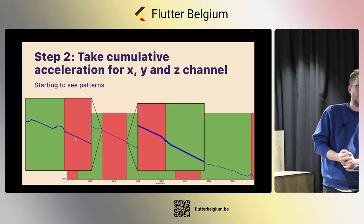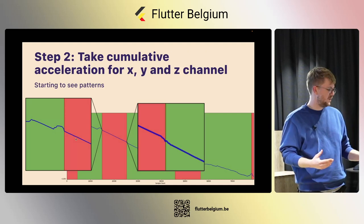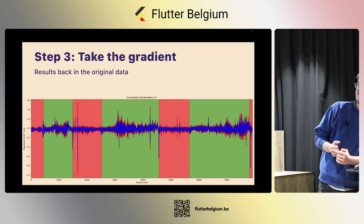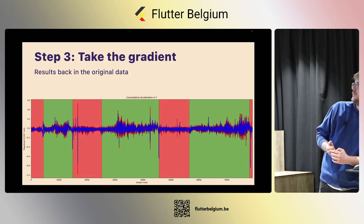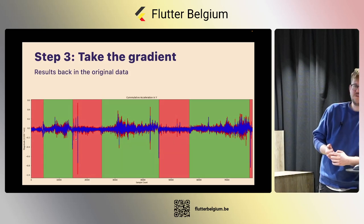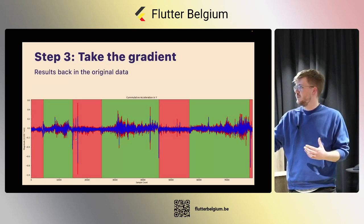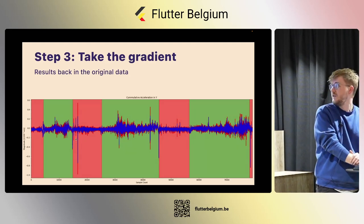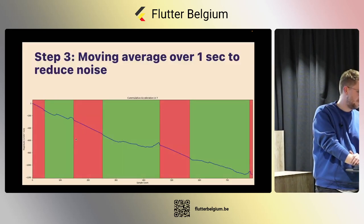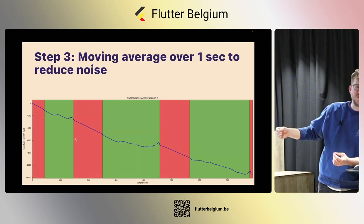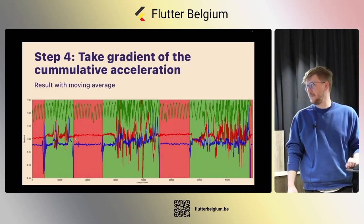When we take the gradient of our data, we get the original noisy data back because of micro-changes — a lot of noise. So we smooth the data by taking a one-second moving average, making the change in acceleration much smoother. Then taking the gradient gives something better. You have the three channels of accelerometer data: X, Y, and Z axes, and we didn't care about orientation at that point.